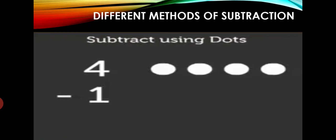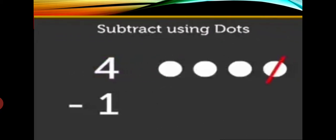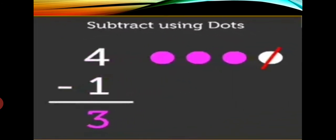Different methods of subtraction. First, subtraction using dots. For example, you have to do 4 minus 1 — you have to subtract 1 from 4. The bigger number we write on top and the smaller number we write below, and we put the minus sign. We will put 4 dots. We have to subtract 1, so we will cut 1 dot. How many dots left? 1, 2, 3. Your answer is 3. 4 minus 1 equal to 3. We can subtract by using dots.